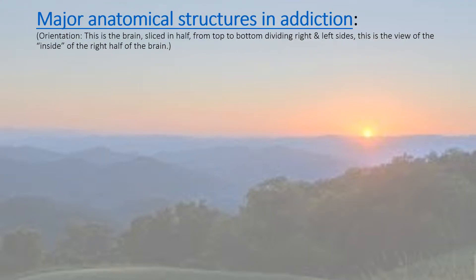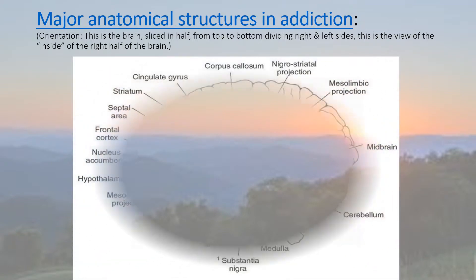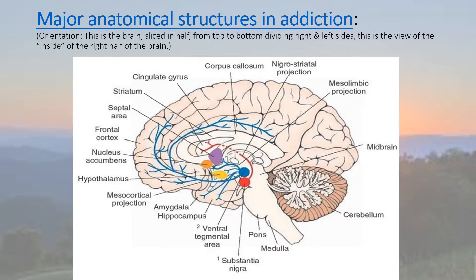Let's start with a review of the major anatomical brain structures involved in the disease of addiction. This is the brain, sliced in half from top to bottom, dividing the right and left sides. This is the view of the inside or medial aspect of the right part of the brain. Here you can see where the spinal cord would be. It comes up to the middle oblong where the medulla oblongata, and then into the pons with its two connections to the cerebellum and what is called the arbor vitae or the tree of life structure right in here. The structure known as the locus coeruleus would be located right there where the pointer is.